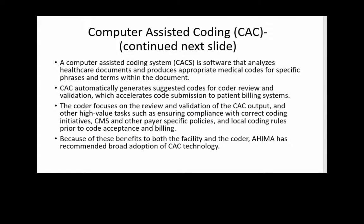Computer assisted coding — I have two slides here for this. This is software that uses algorithms and natural language processing to figure out what terms or words in documents might need a medical code. The software analyzes healthcare documents and produces codes for these phrases or terms. The CAC automatically generates suggested codes, and then the coder comes along and focuses on the review and validation of the CAC output. AHIMA recommends it and a lot of hospitals are using it.